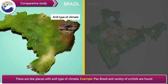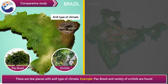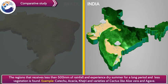Brazil: There are few places with arid type of climate. India: The regions that receive less than 500 mm of rainfall and experience drier summers for a long period have less vegetation.